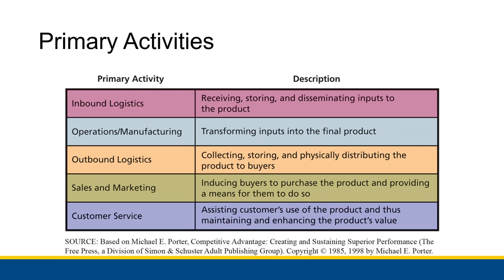Third is outbound logistics — collecting, storing, and distributing the product to buyers. Once you create a product, how do you store it until it's ready to ship, prepare it for shipping, and get it out to customers? Fourth is sales and marketing, which induces buyers to purchase the product and provides a means for them to do so — advertising, your website, or listings on marketplaces like Amazon or eBay. Fifth is customer service: once a product is in the hands of a customer, you maintain and enhance that product's value by continuing to provide customer support.